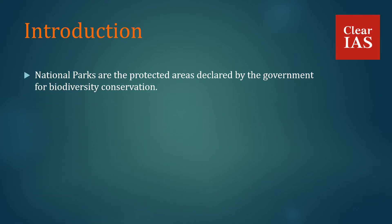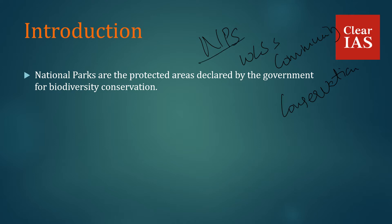National parks are the protected areas declared by the government for biodiversity conservation. In India, we have four types of protected areas: National Parks, Wildlife Sanctuaries, Community Reserves, and Conservation Reserves. In this video, we will be discussing about the National Parks, and in later videos, we will be discussing about these three and the differences between them and National Parks in detail.